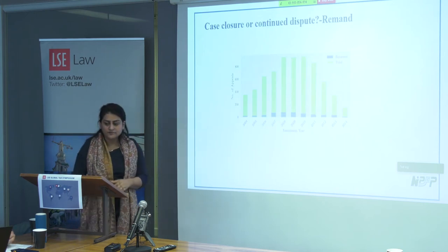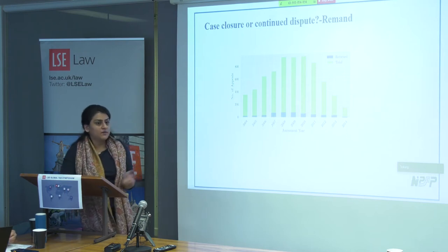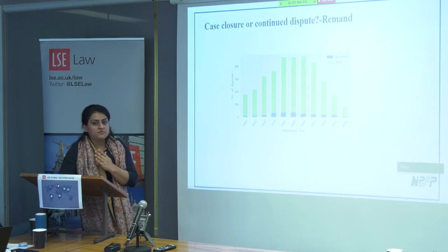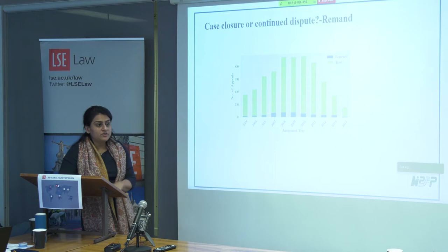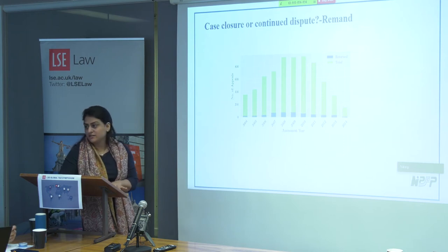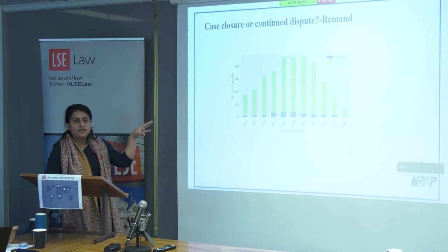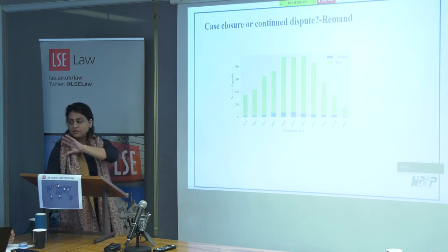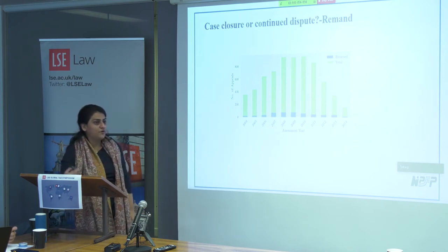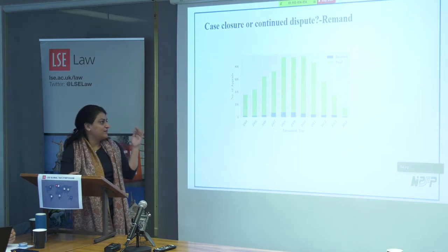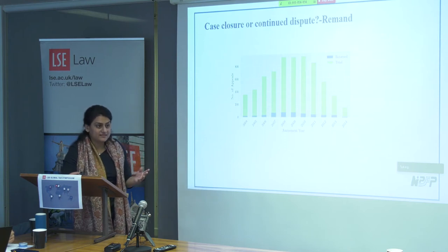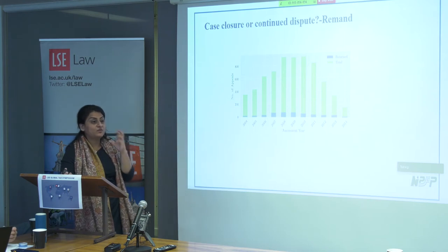One problematic feature of transfer pricing disputes is that once a case reaches the Tribunal — which decides on facts like whether the comparable is correct or the methodology was appropriate — the Tribunal may remand the case back to the assessing officer for fresh adjudication. This sends the case back into the process, potentially restarting the full appeal cycle. We extracted this from the orders. The somewhat heartening finding is that remands average only about 6.5% of total cases, though the value of those cases may be disproportionately large and warrants further research.